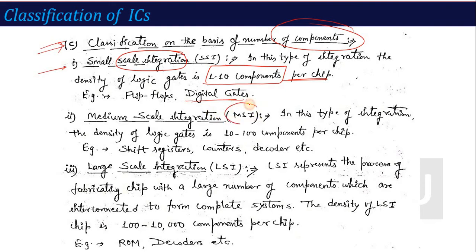In Medium Scale Integration (MSI) technology, the density of components increases to 10 to 100 components on the chip. If you have up to 100 components on the chip, that technology is called Medium Scale Integration (MSI). Examples include shift registers, counters, and decoders — ICs where the number of components is up to 100.